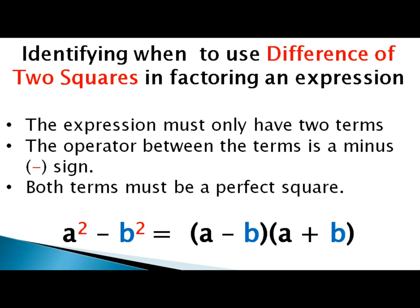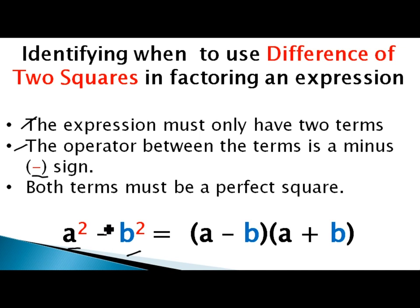Similar to common monomial factor, there are certain guidelines you must follow to use this method. The first guideline is that the expression must have only two terms — as seen in the example a² minus b², which has exactly two terms. The second guideline is that the operator between the terms must be a minus sign.